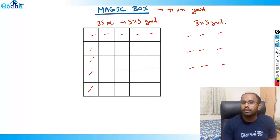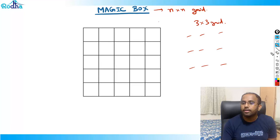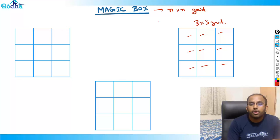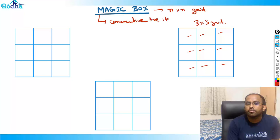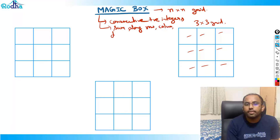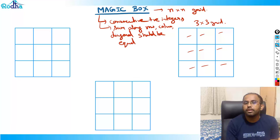Magic box is only for an n cross n grid. In any n cross n grid, if you have to fill consecutive positive integers, you must fill them in such a way that the sum along every row, column, and diagonal are all equal. This is called the magic box.